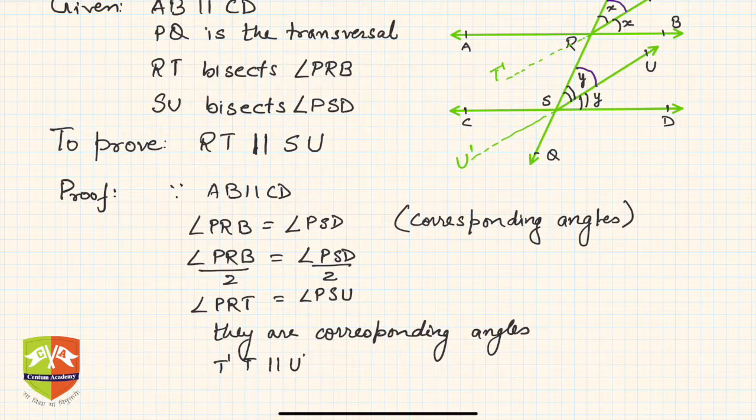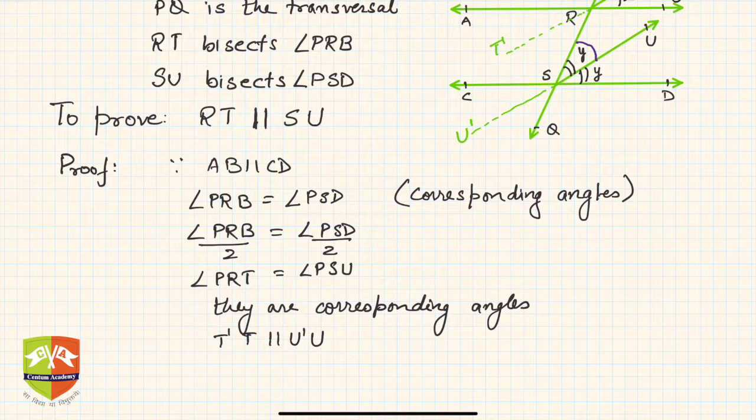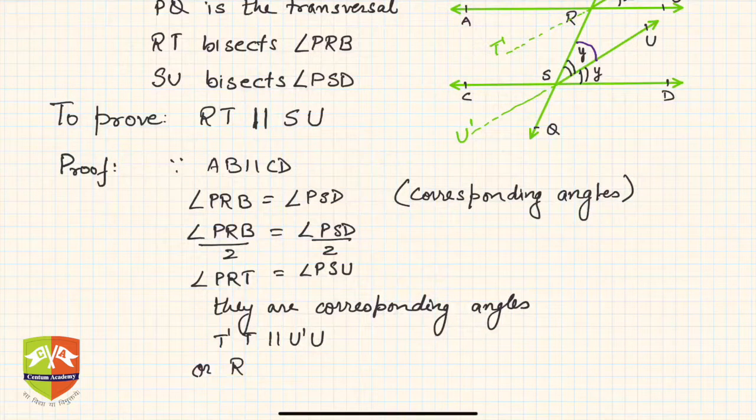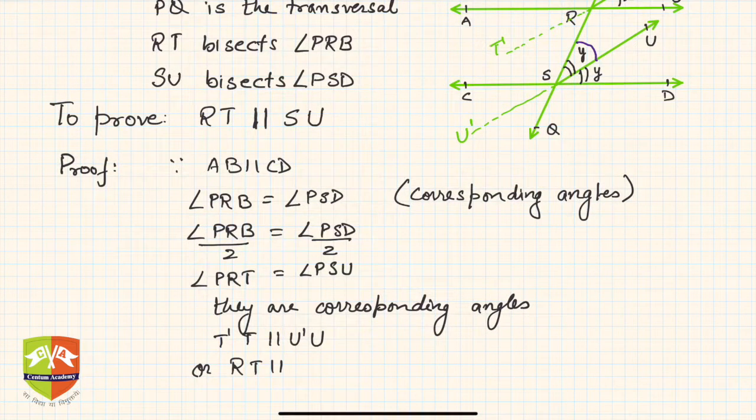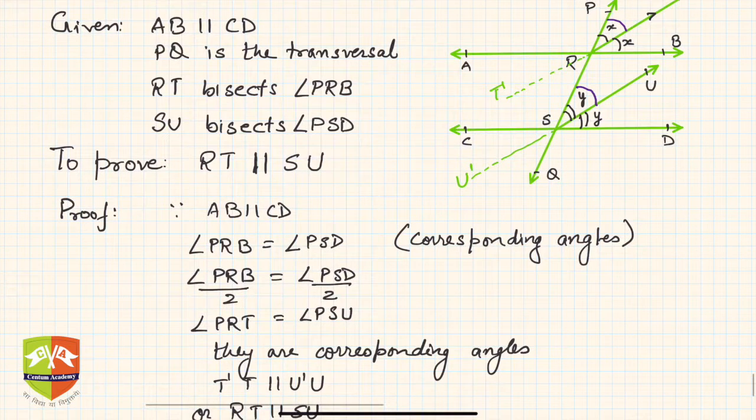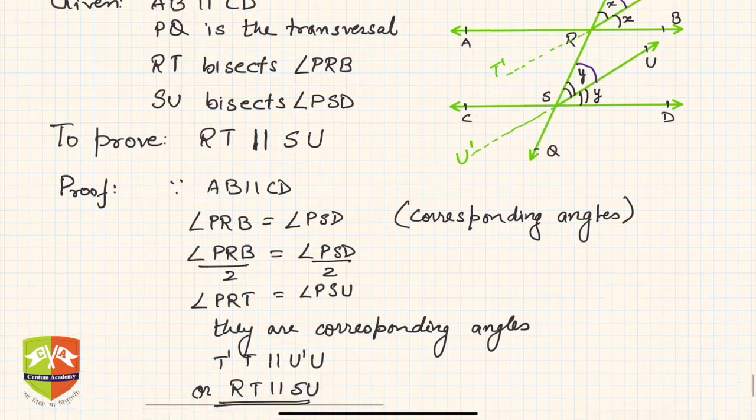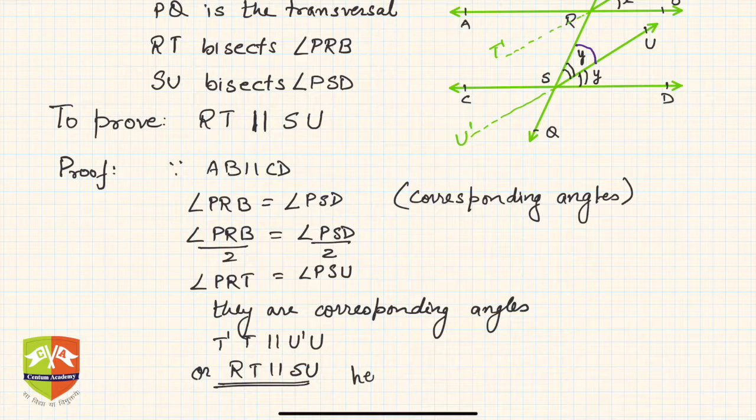That means T dash T is parallel to U dash U, or RT is parallel to SU. This is what we needed to prove. So the bisectors of the corresponding angles RT and SU themselves are parallel. Hence proved.